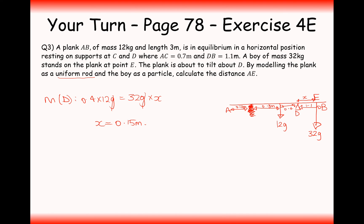That does make sense, because the 12g force is only 0.4 distance, and 32g is a lot more than 12g, so it would make sense for the boy to be standing quite close to the pivot if it's only balancing out a 12g newton weight.